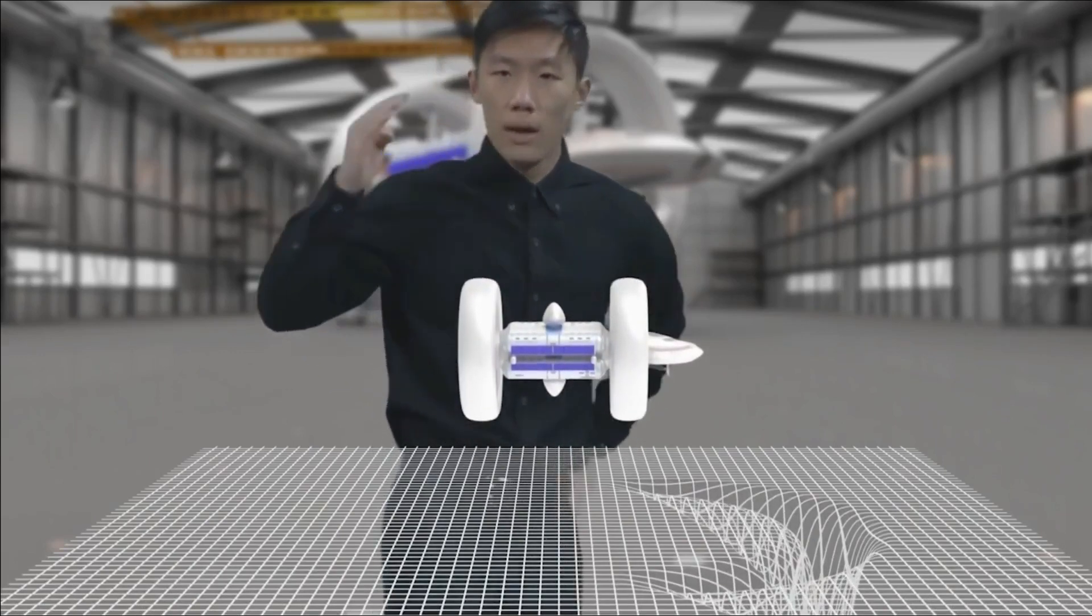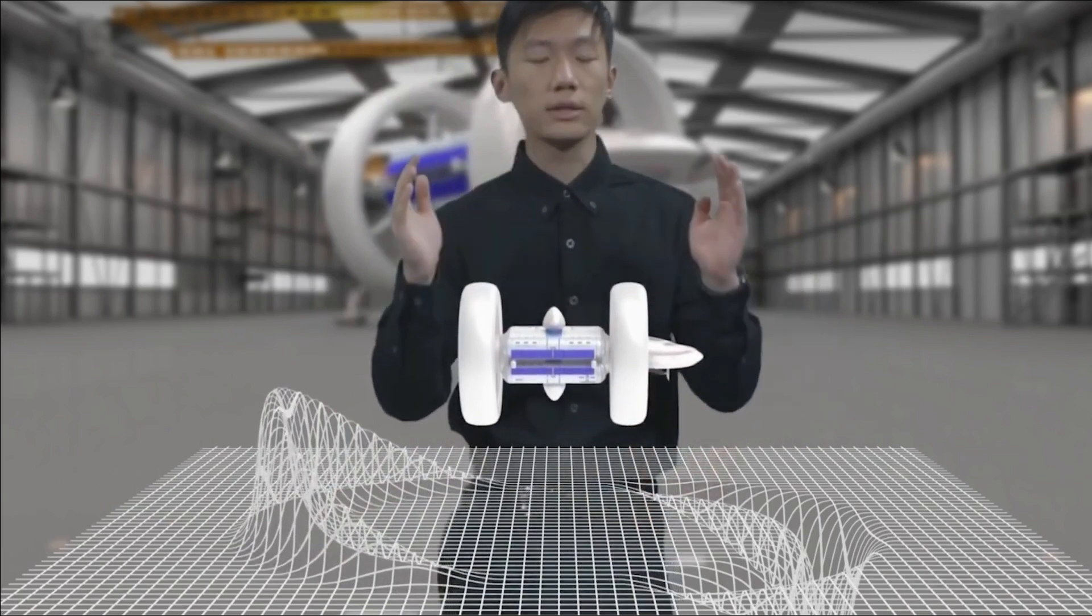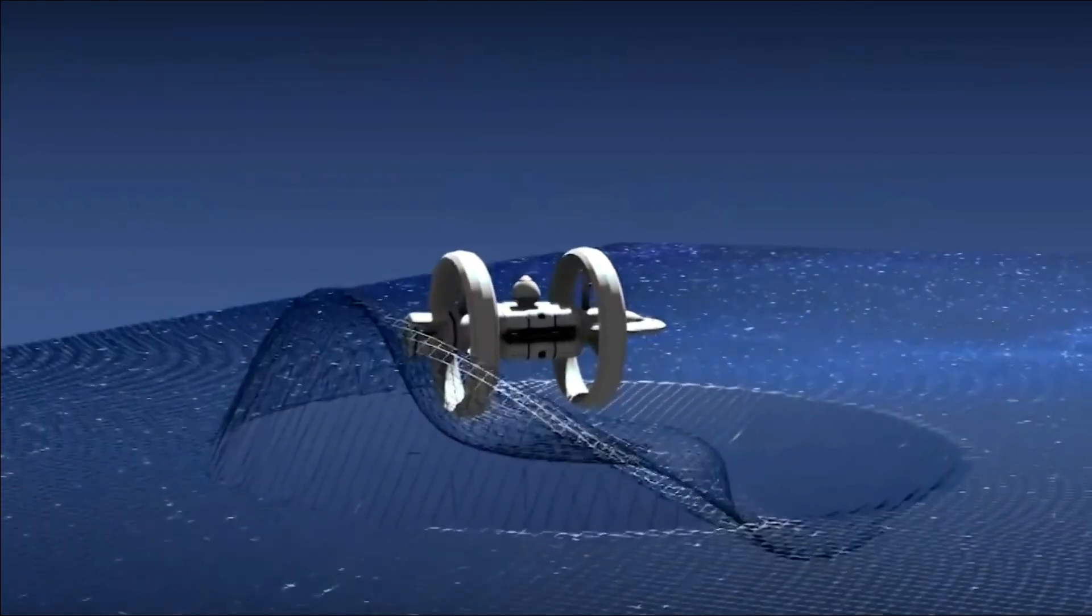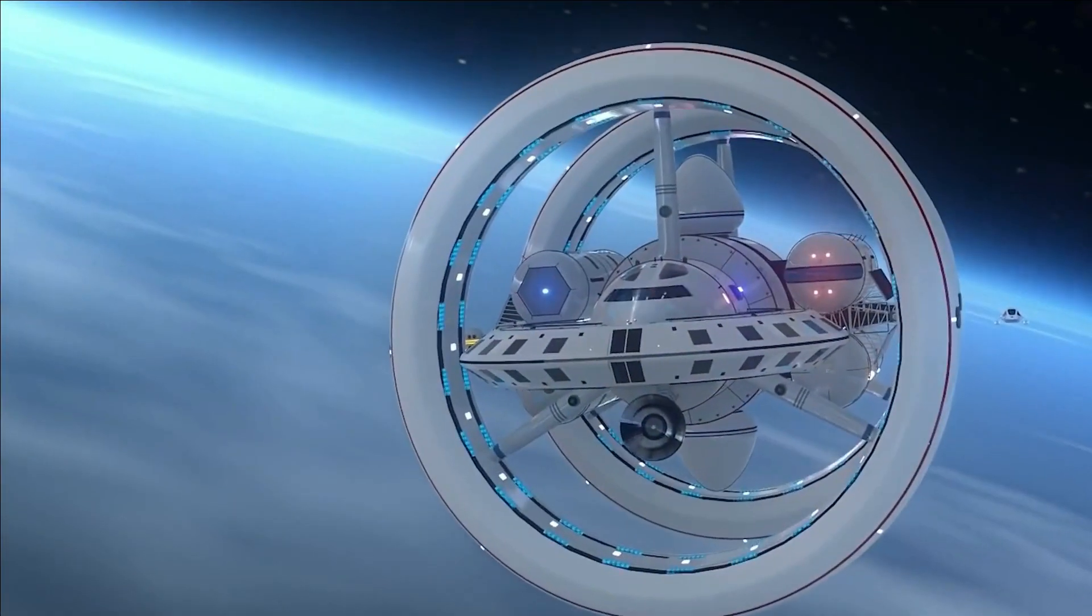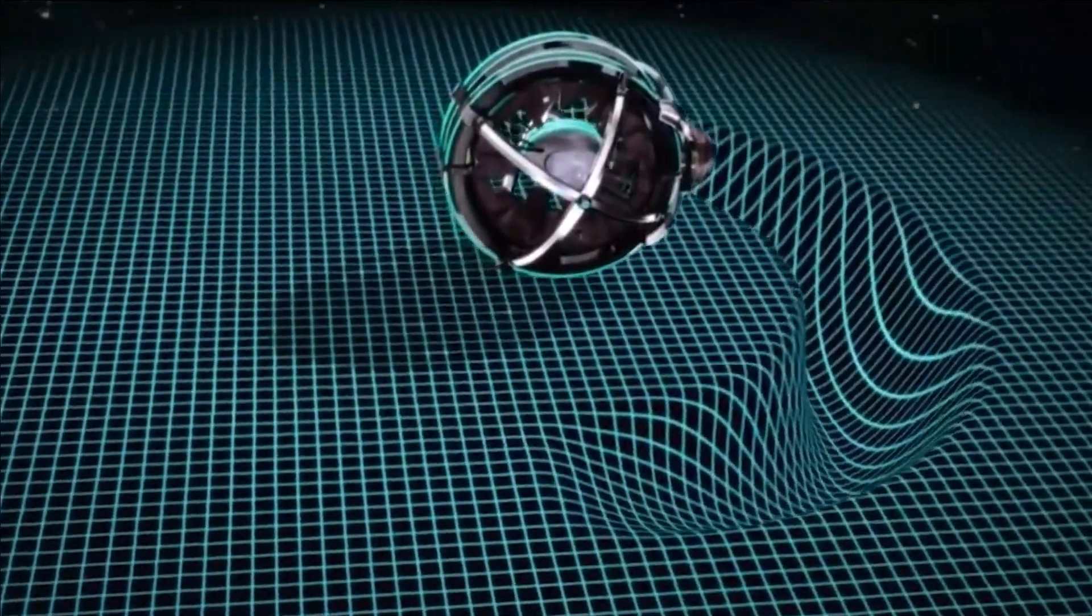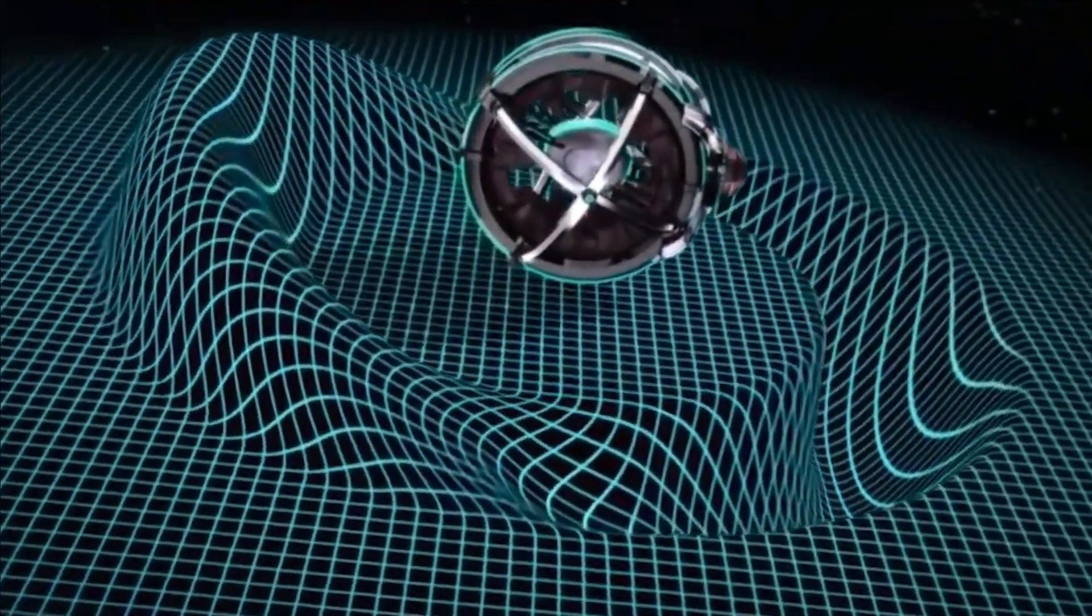This shows the warp drive as a wave of curvature on which a ship will ride to its destination. Even though it is the cornerstone of warp travel, Lentz argues it is not even the essential feature.